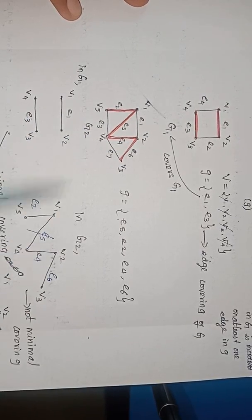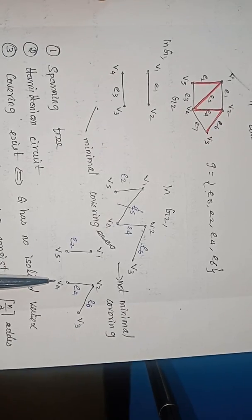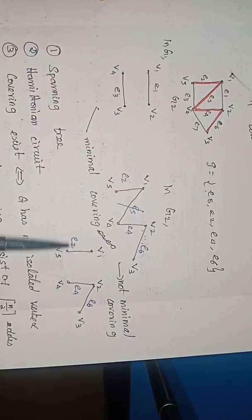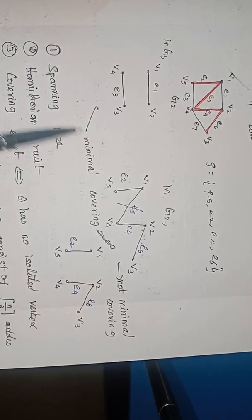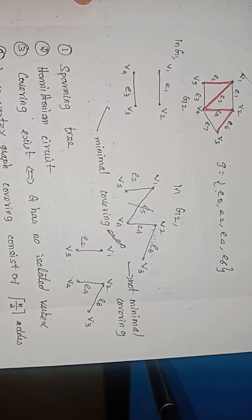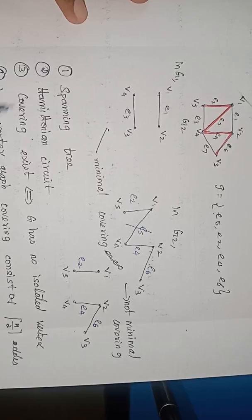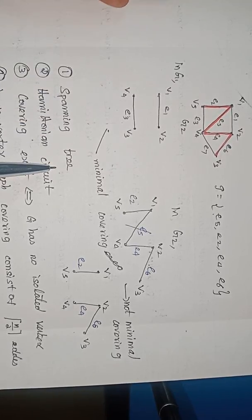Look at the minimal covering. After removing E5, this is the minimal covering. This is one component and this is the second component. These two are star graphs. Star graphs are nothing but they are trees. Now, what are the methods to find a minimal covering? Whenever you find a spanning tree of a graph G, that is always a minimal covering.